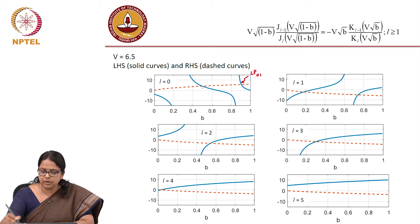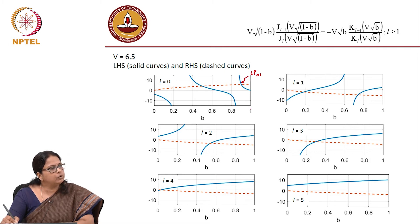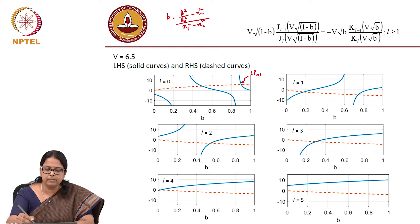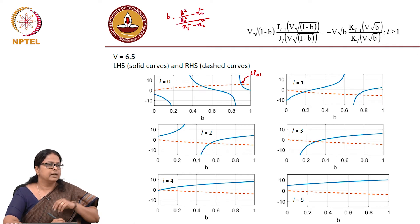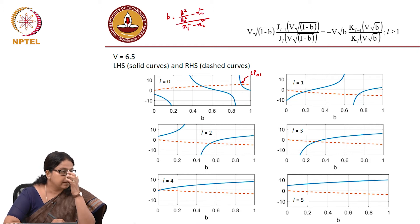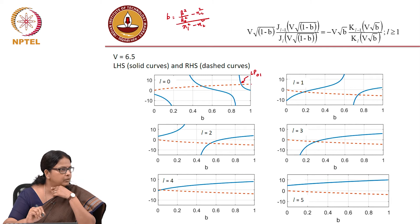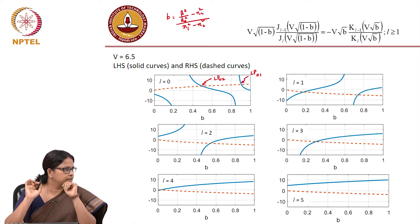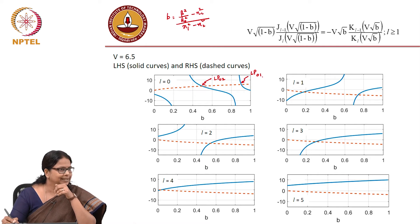Why do we name this as LP01? Because the corresponding B is closer to 1. B closer to 1 means the effective index — B was beta-squared by k-naught-squared minus N2-squared, divided by N1-squared minus N2-squared — when B is closer to 1 it means beta-squared is closer to N1-squared, so the effective index is more close to the core index. That is probably the strongest mode of the fiber, which is why we call it the fundamental mode. The next higher order mode is named 2. The numbering 1, 2, 3 is just the number of solutions, which is why you do not have an LP00 — we say first solution, second solution, etc.